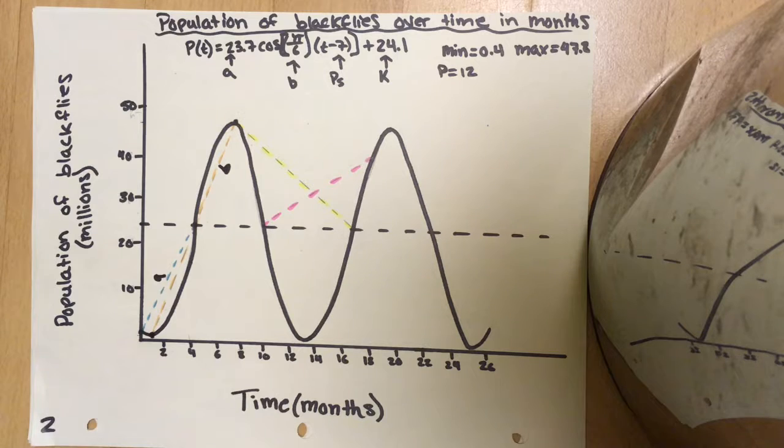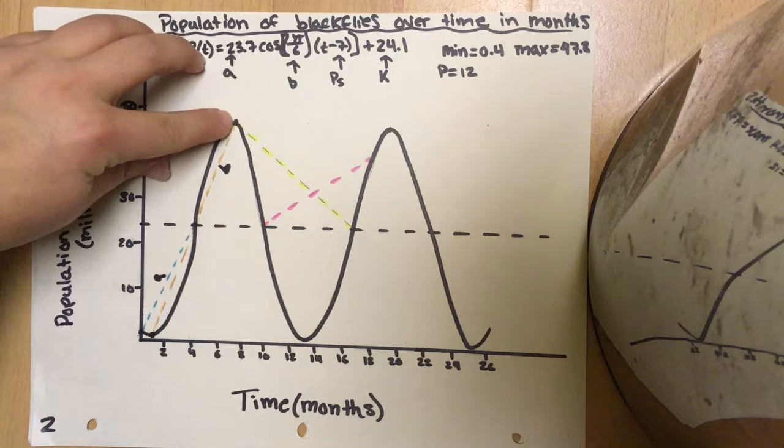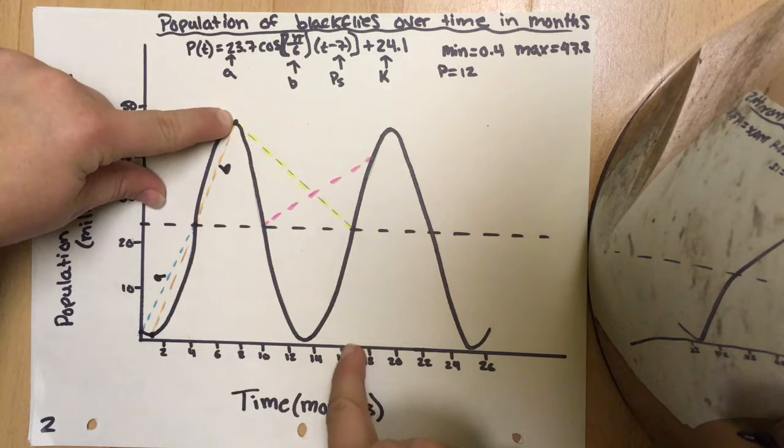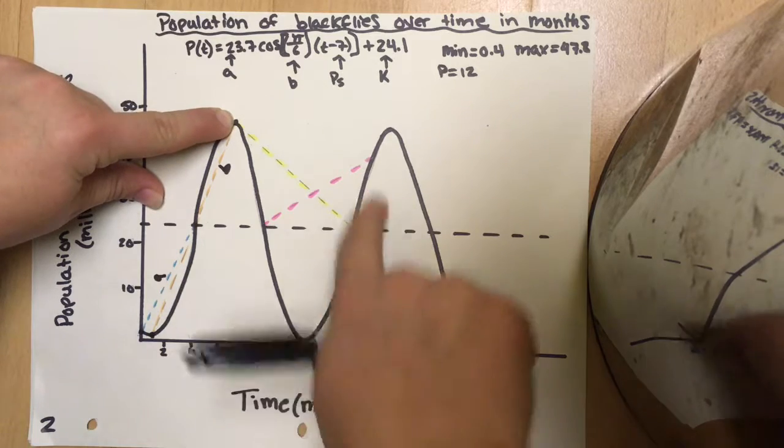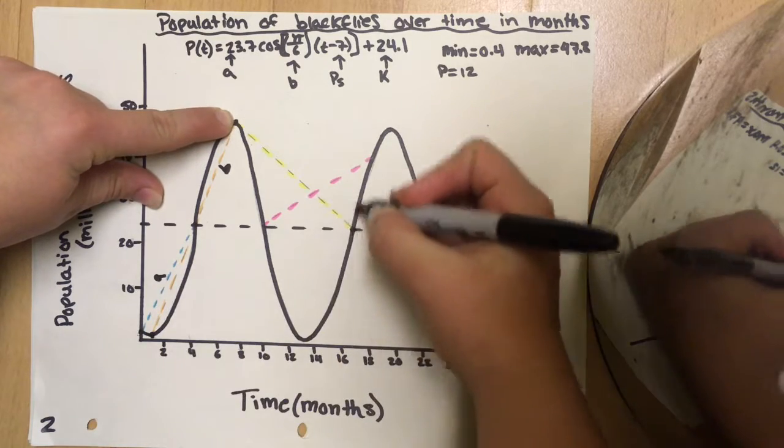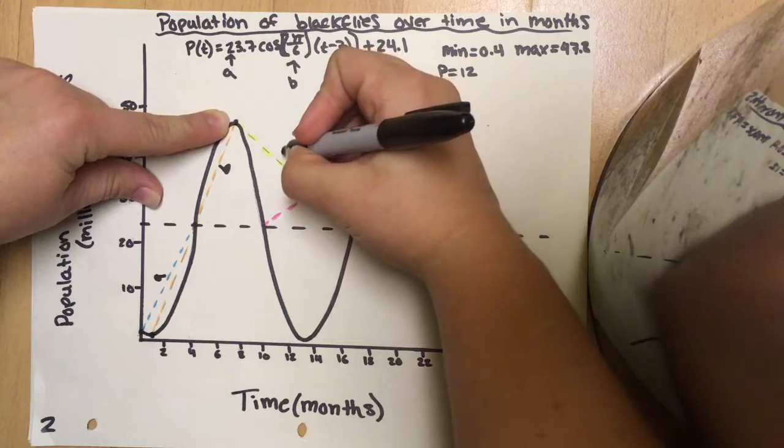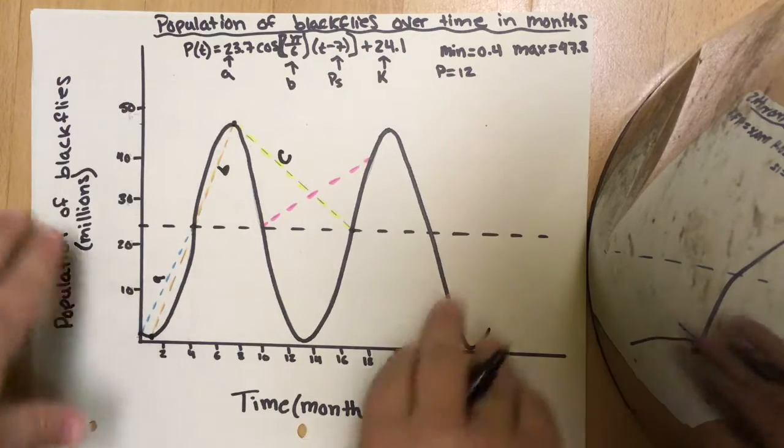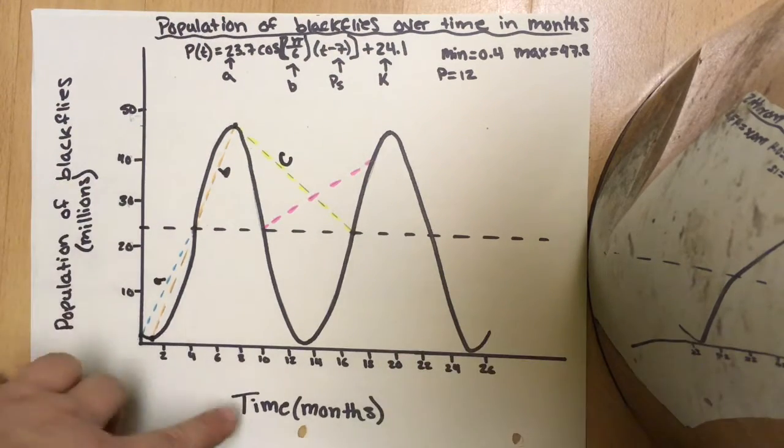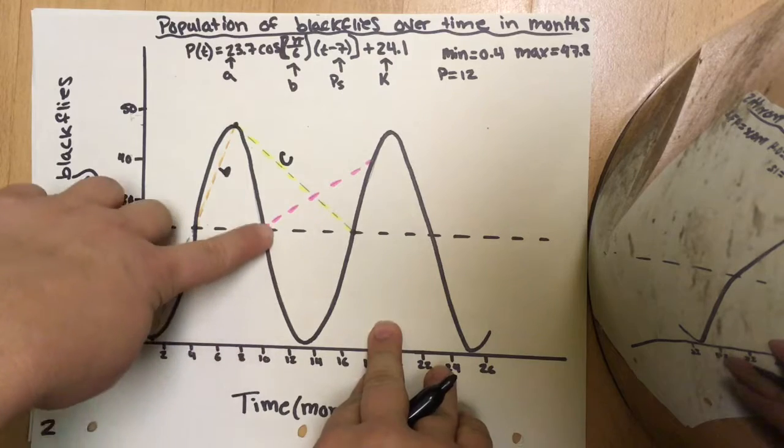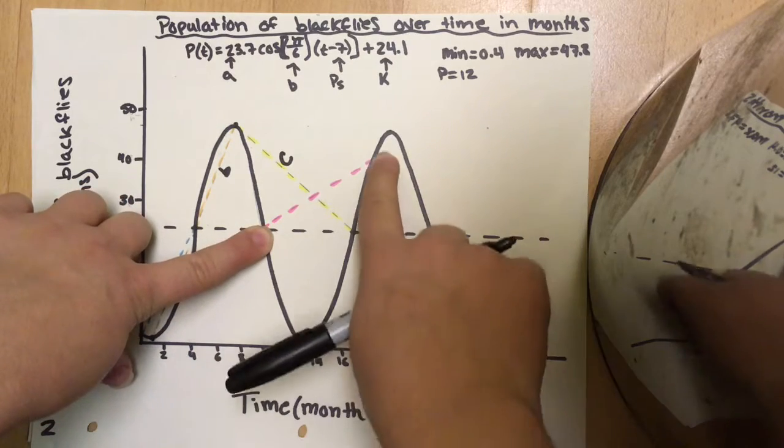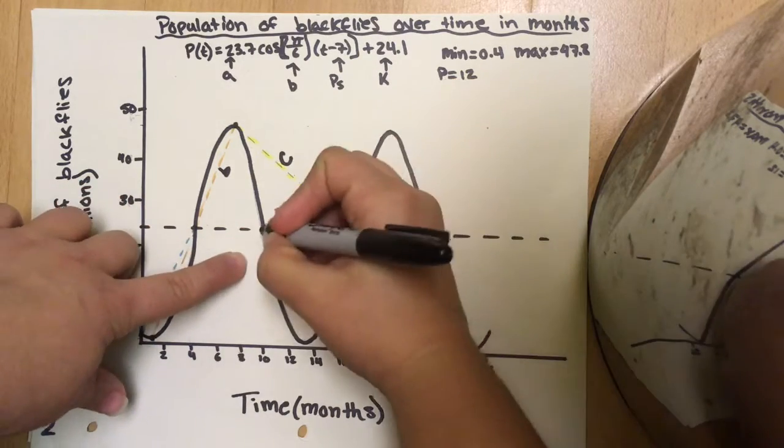C is going to be from 7 months, we already have our point there, until 16 months. Here's 16, I'll draw a line right up. That's C. And D is going to be from 10 months all the way until 18 months.